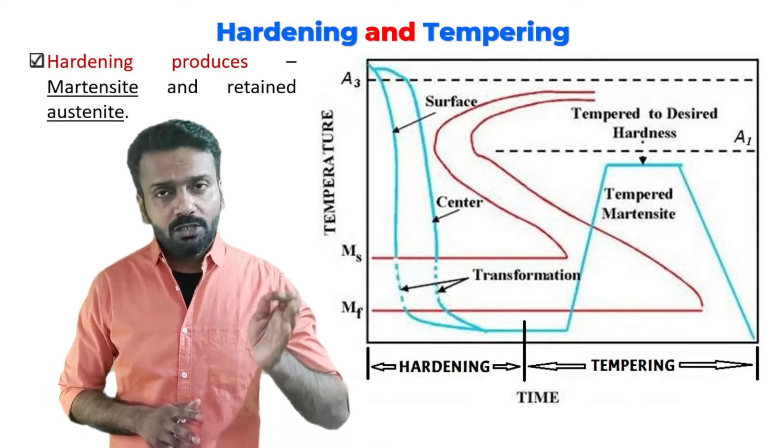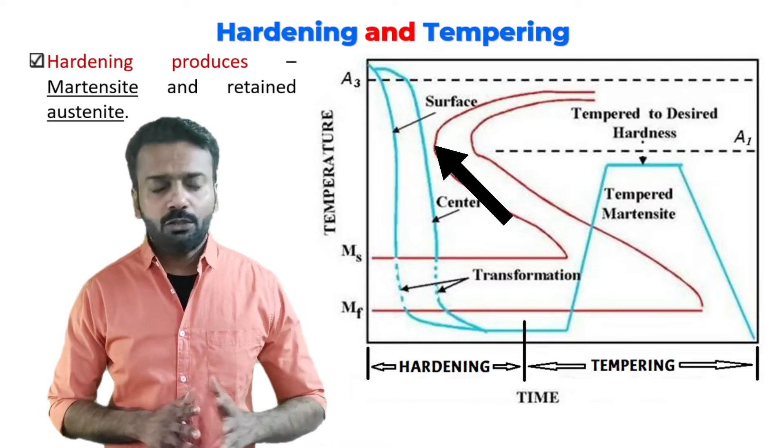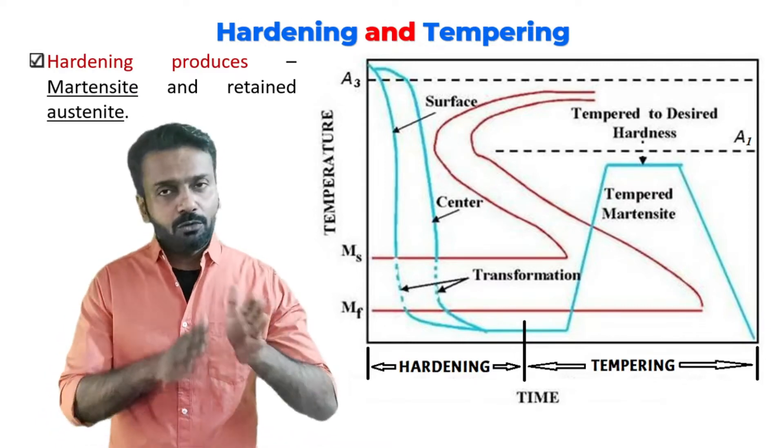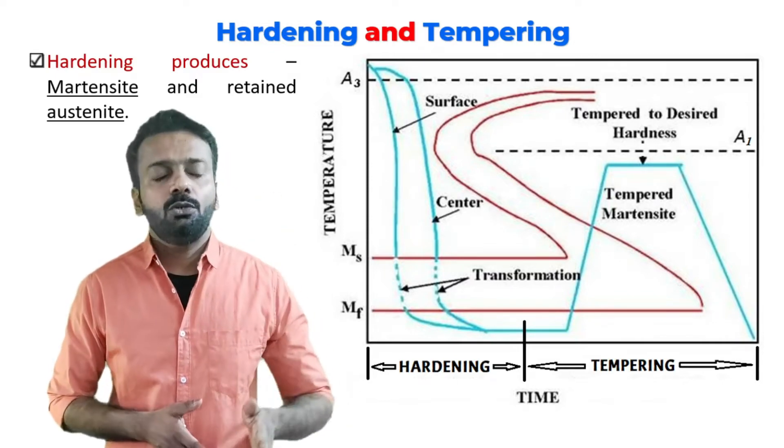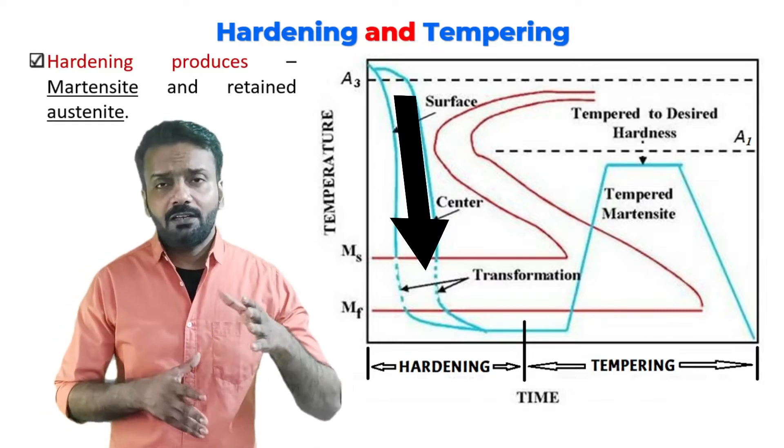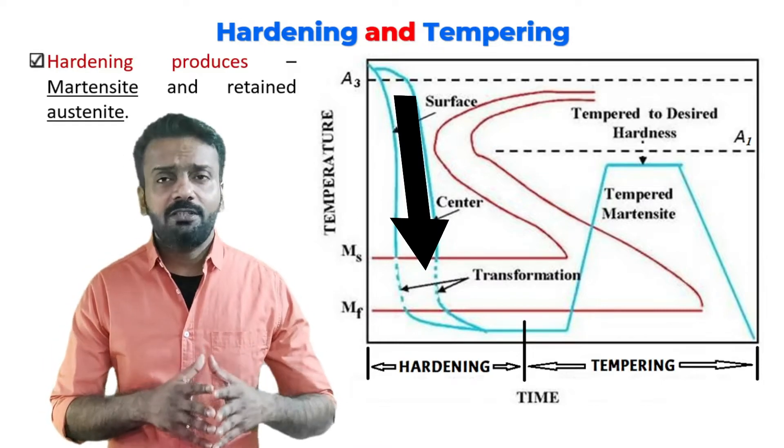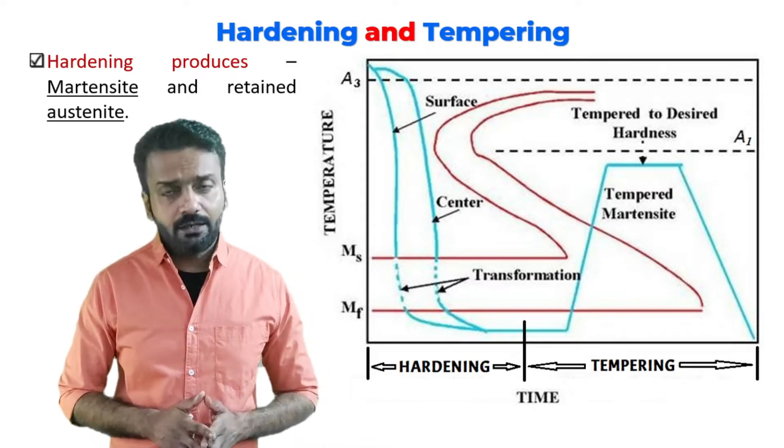That means we don't have to touch the nose which you are seeing here for the TTT plot of the eutectoid composition. We have to cool the material so rapidly that it does not touch the nose point - this is known as critical cooling. We directly reach the MS, the martensitic start transformation.